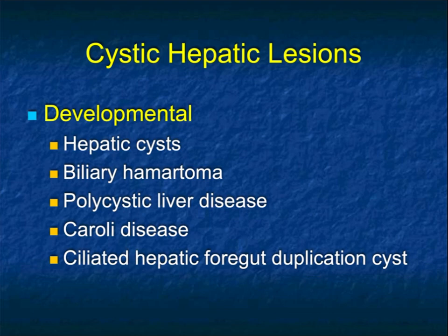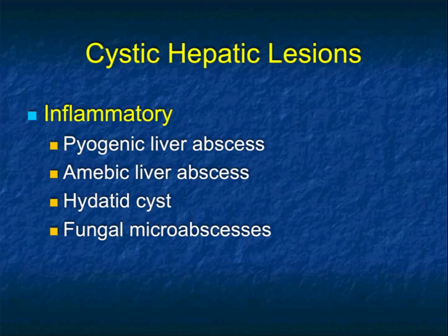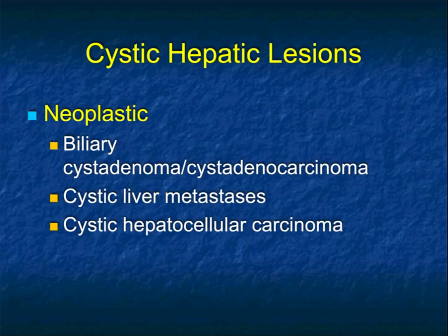Cystic lesions can also be inflammatory — liver abscesses, pyogenic or amoebic. Hydatid disease is classic for being cystic with multiple daughter cysts. Amoebic abscesses are cystic and typically in the right lobe of the liver. Fungal abscesses are numerous and small, commonly involving the spleen and may involve the kidney — typically in immunosuppressed patients. So one of the things when we do a differential diagnosis is that you need to know the patient's history and presenting symptoms, which will really help you in triaging the problem at hand.